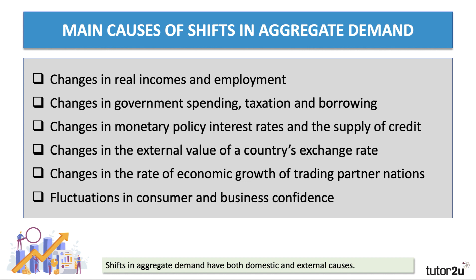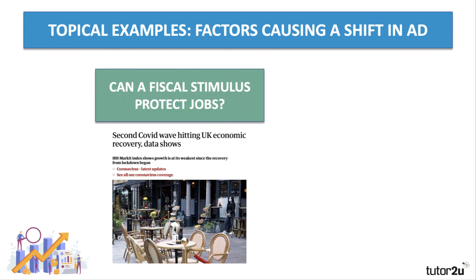Fluctuations in business and consumer confidence and sentiment can also have quite a powerful effect on aggregate demand. Two topical examples: there's a big discussion in the UK about government financial support for businesses during the pandemic, and the extent to which a second COVID wave in autumn 2020 might take the economy back into recession and bring aggregate demand down again — and whether the government should extend furlough schemes and other incentives to support aggregate demand.